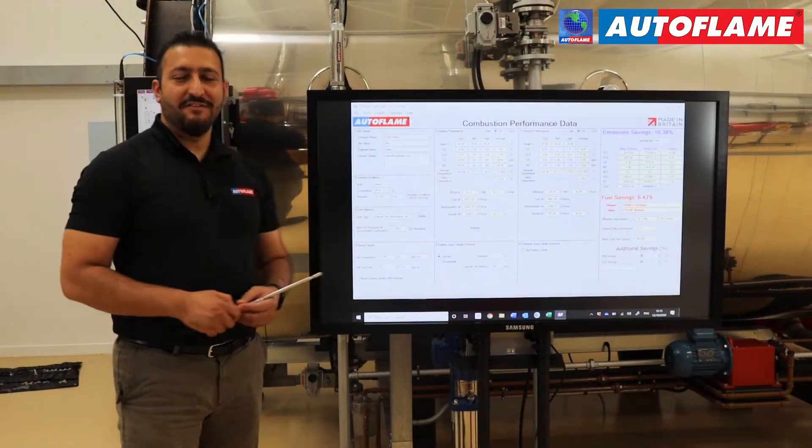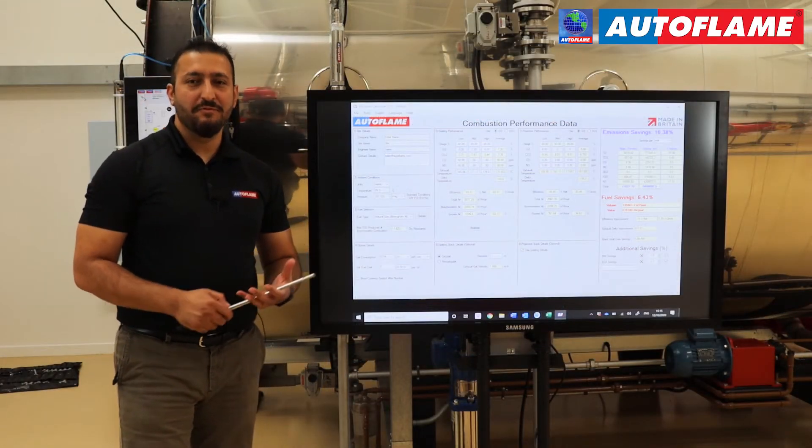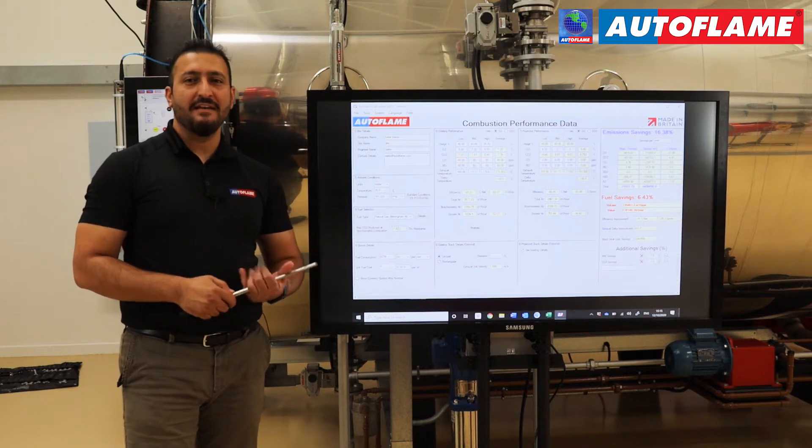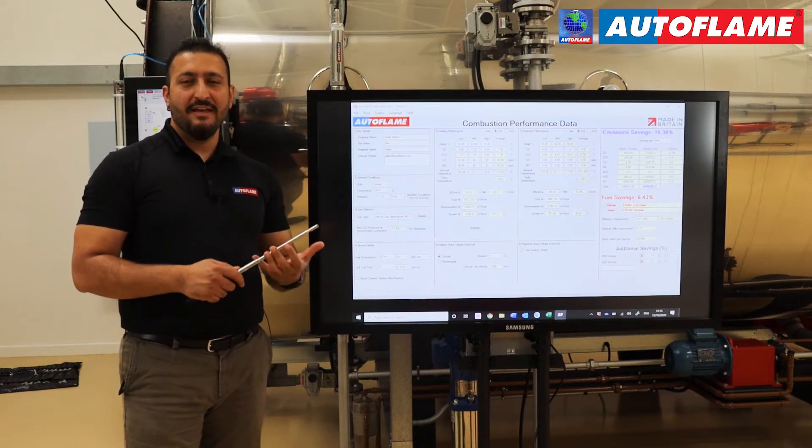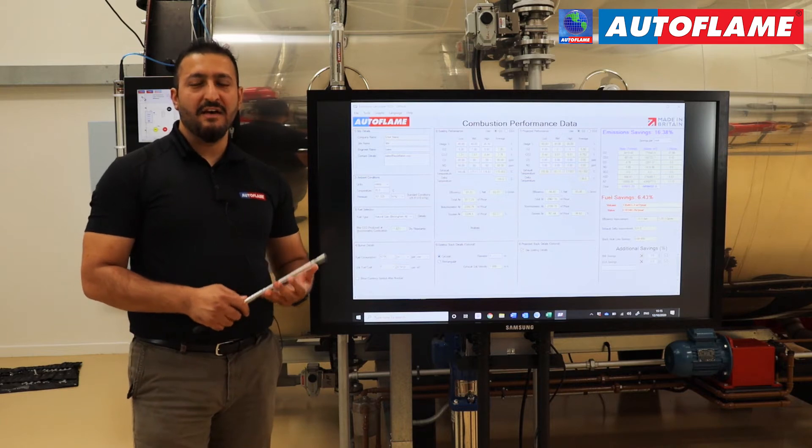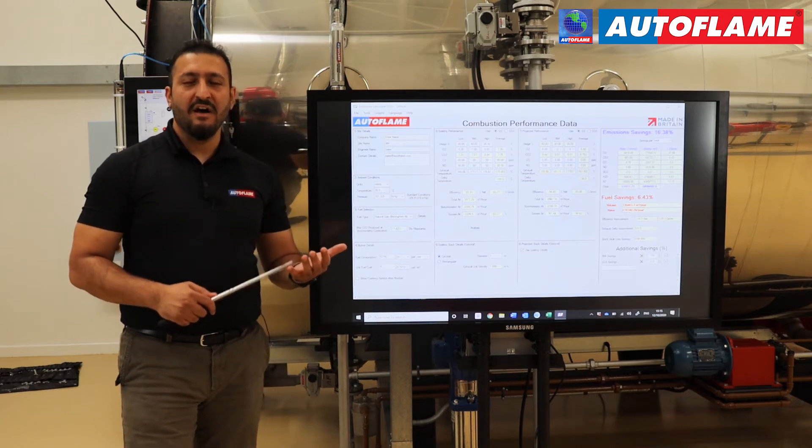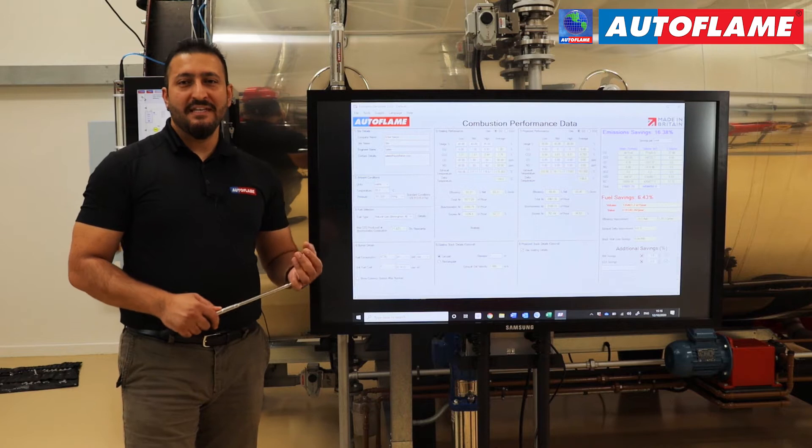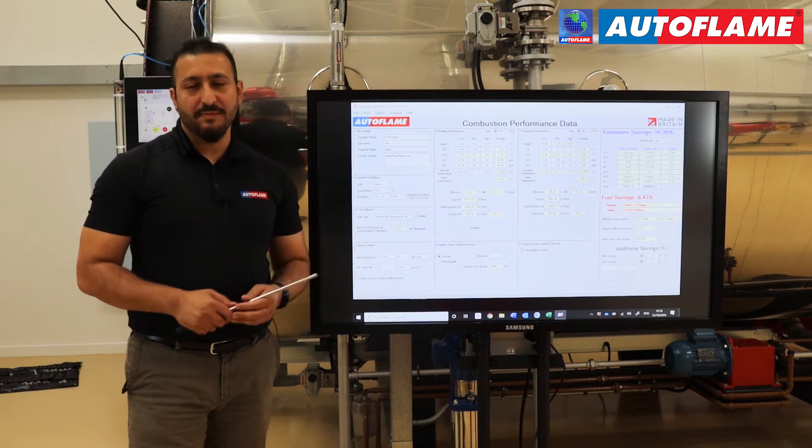In this latest version of the emissions calculator, we made some improvements where the performance data has been put in. So rather than taking an average reading, now we'll put in the data on low fire, mid fire, and high fire positions with a percentage of how long this burner stands on those percentages.